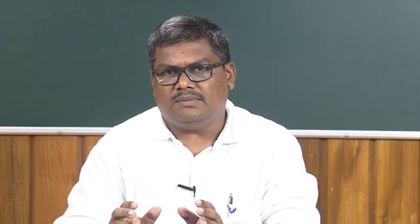This is also called the magical number. Very recent studies by Neith demonstrate that it is not 7 plus or minus 2 items, but rather 4 plus or minus 2 items — that is the capacity of the short-term store.